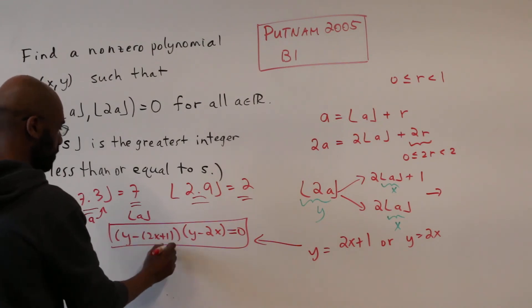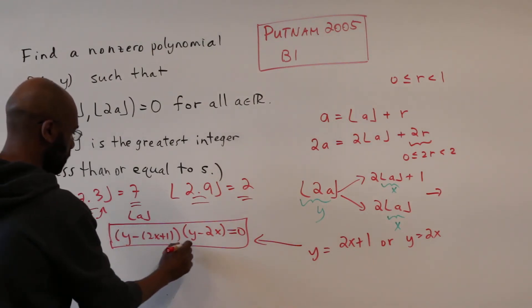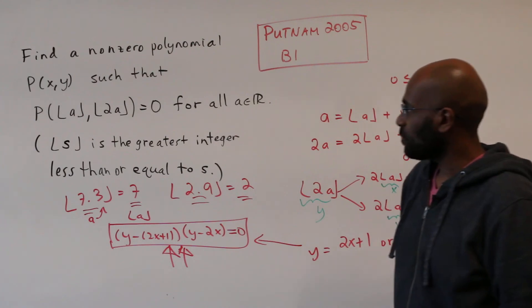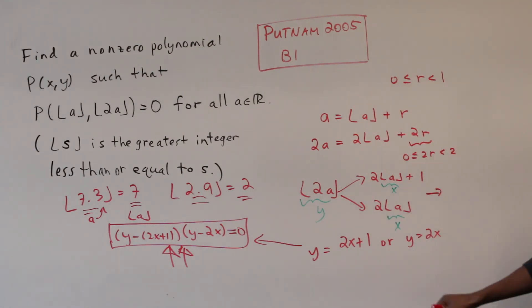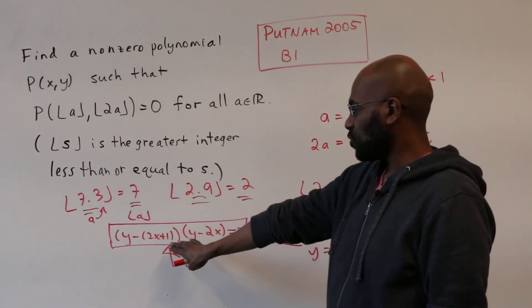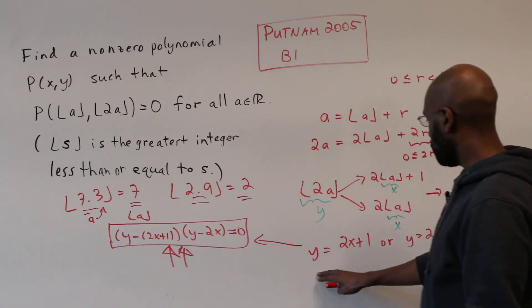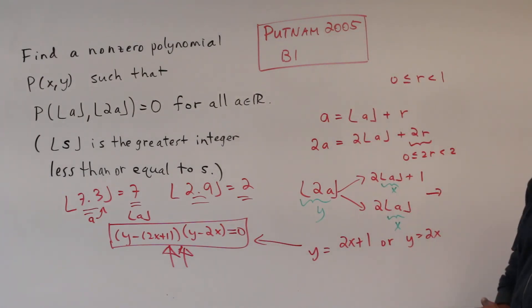And so here is the polynomial on the left that we can choose for p of xy, which will force y to be 2x plus 1 or y to be 2x, which actually has to be true according to what we figured out here.